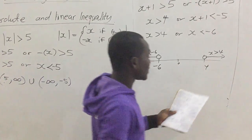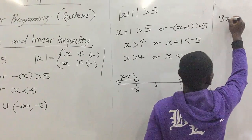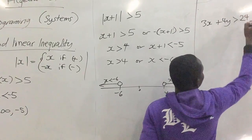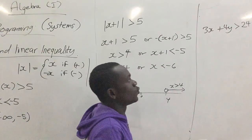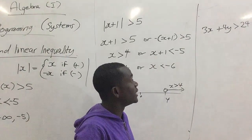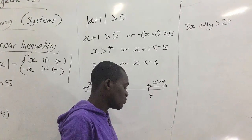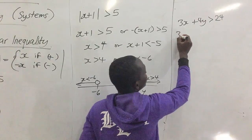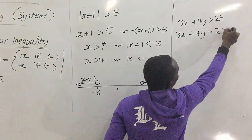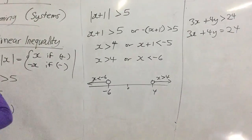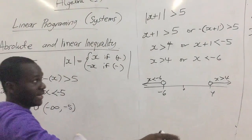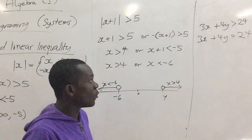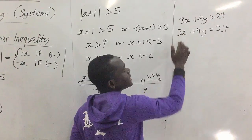Now, what about when we have inequality signs without absolute functions? For example: 3x plus 4y greater than 24. To find the solution set, the first thing we do is write an equation from the inequality: 3x plus 4y equals 24. Since we are using linear programming — linear meaning something in the form of a line — we transform the inequality into line form.